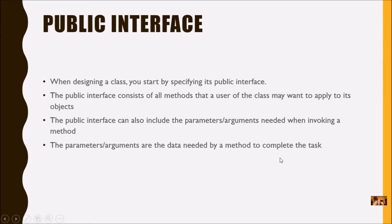First, let's review the public interface. When designing a class, you start by specifying its public interface. This is part of the creative process — designing what is needed for your class. You don't always have to know everything. When we started with the clicker class, we started with just a few methods and then added to it. That's perfectly fine, but you need to start somewhere. Deciding on the public interface is just doing your plan.